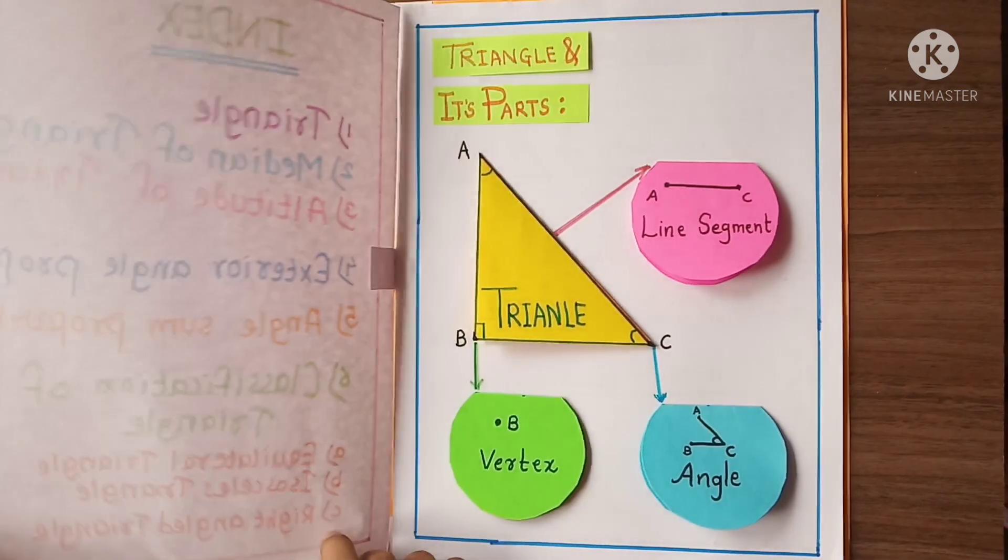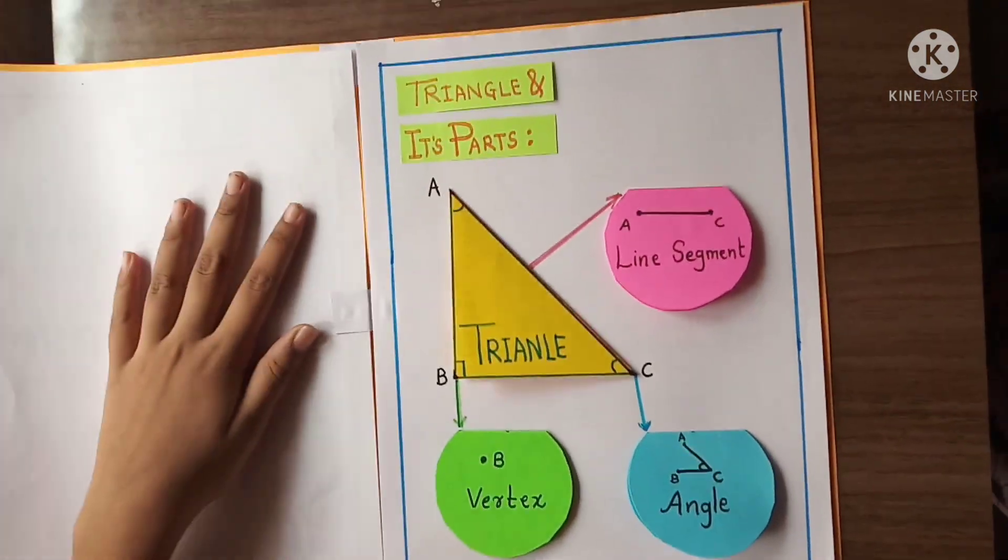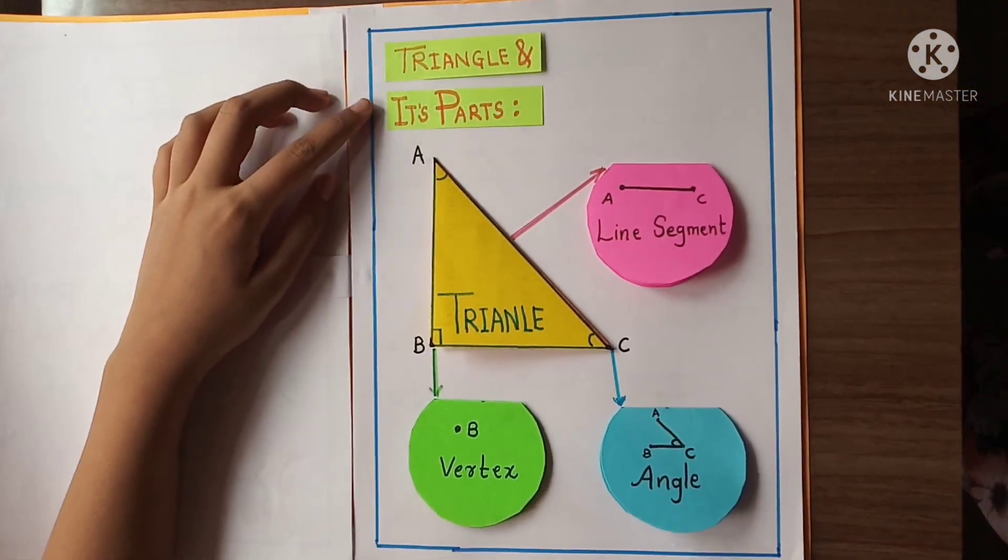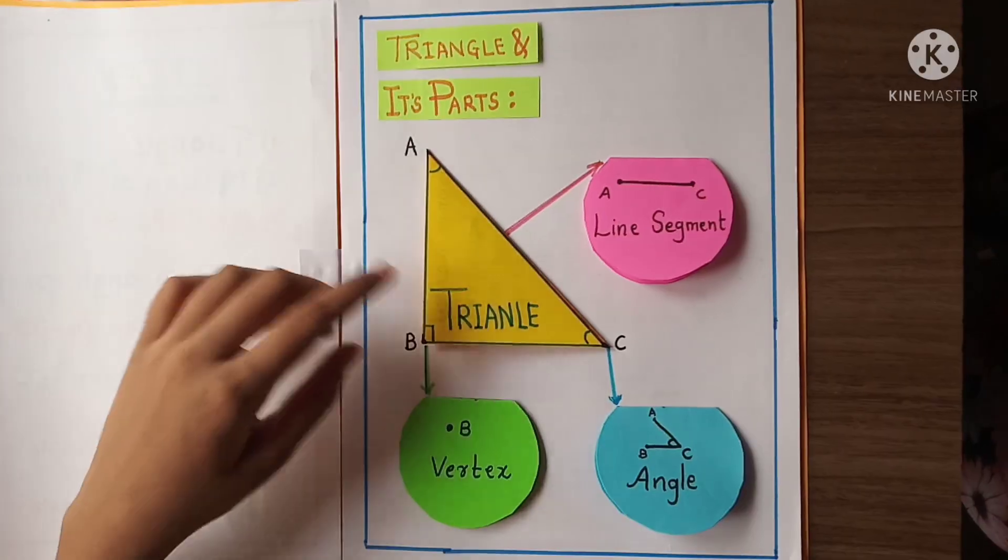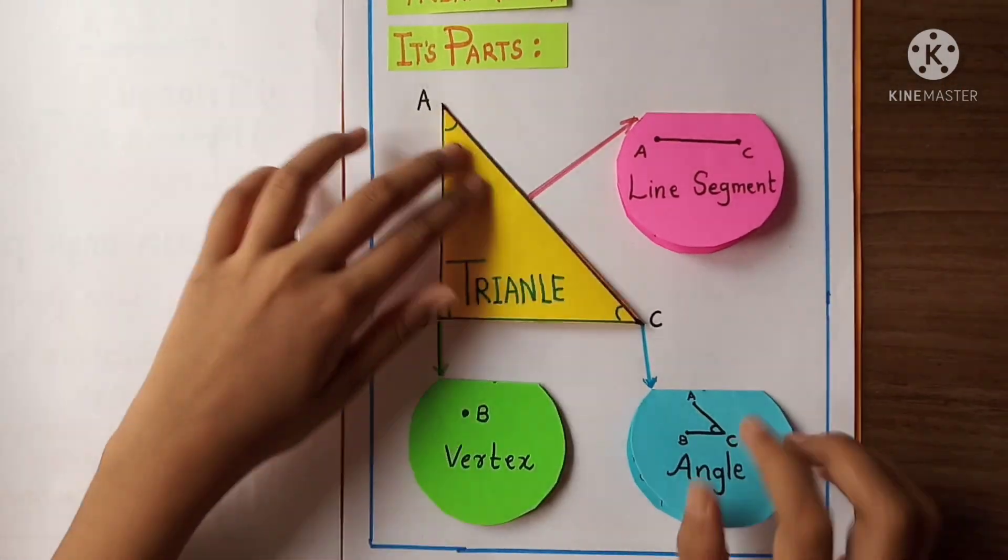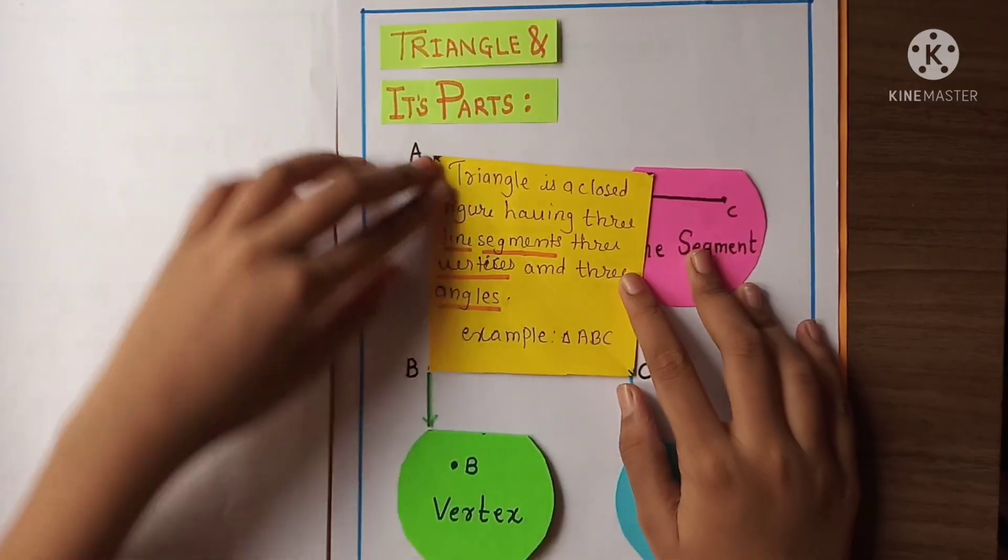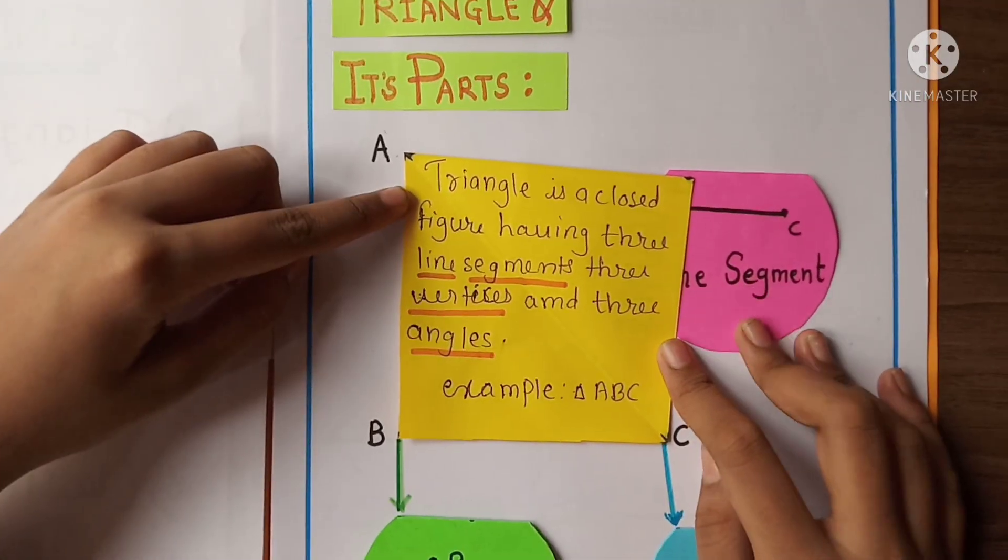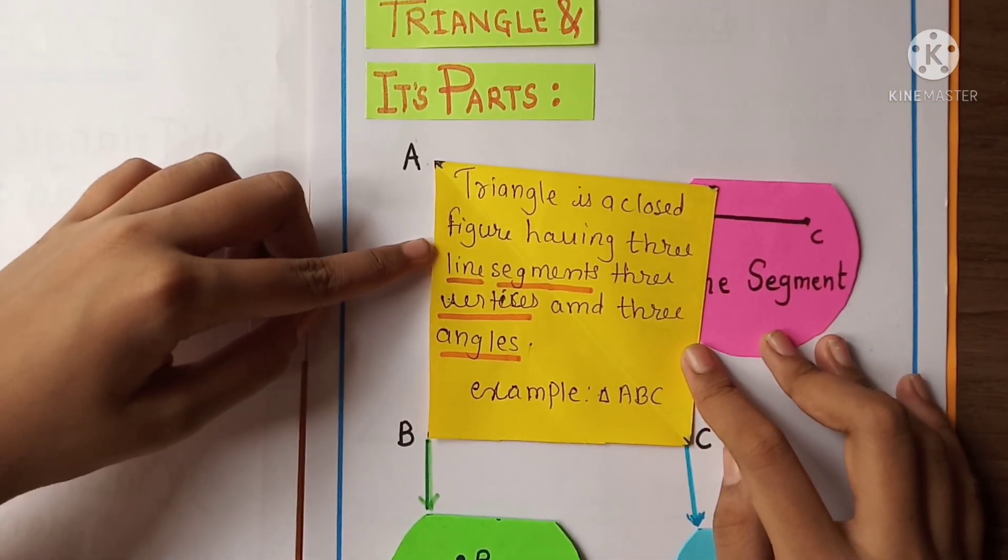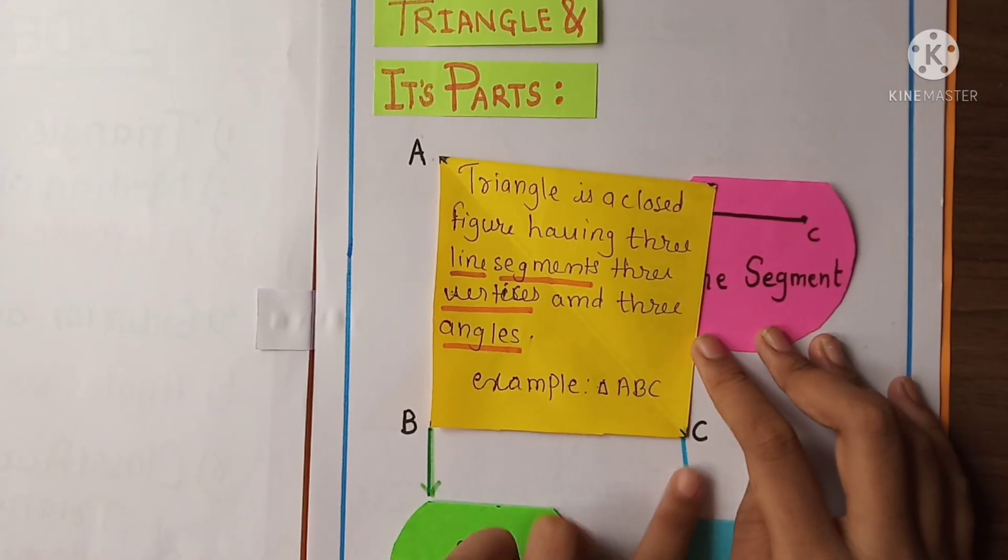Let's see. Here is the triangle and its parts. Here is the triangle ABC and let's see what's inside. Triangle is a closed figure having three line segments, three vertices and three angles, example triangle ABC.